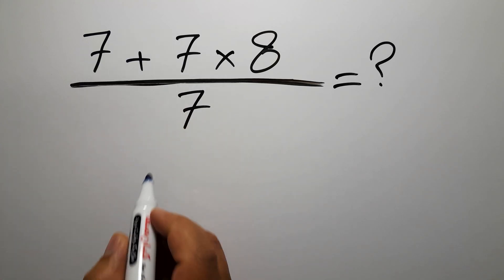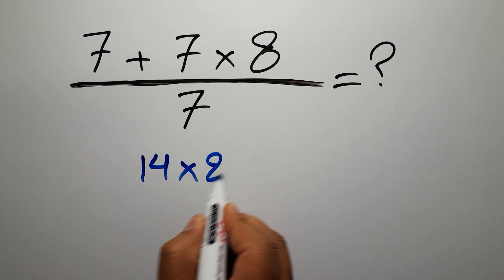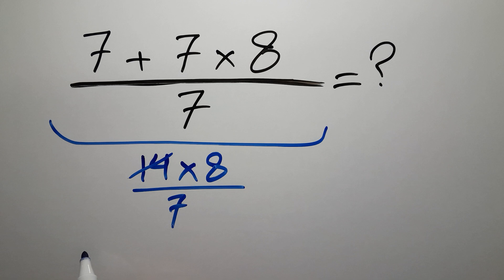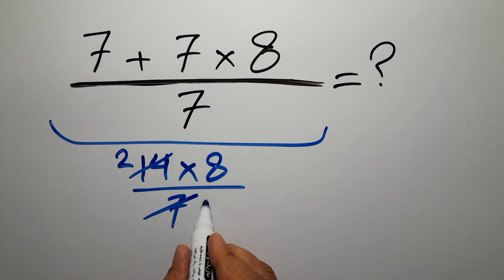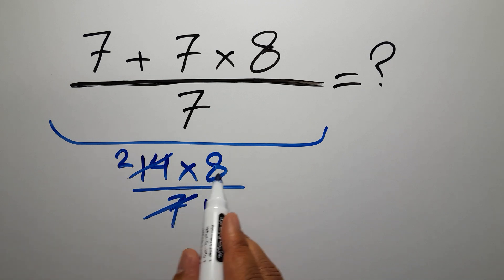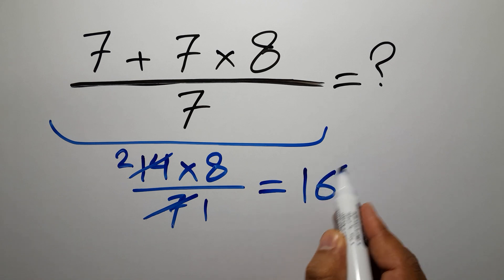7 plus 7 gives us 14, so 14 times 8 over 7. No, 14 divided by 7 gives us 2, and 7 divided by 7 gives us 1, so we have just 2 times 8, which equals 16. But this answer is not correct.